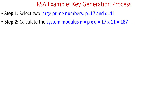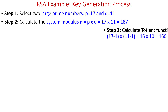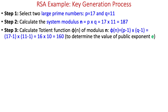In step two, we calculate the system modulus n = 17 × 11 = 187. In step three, we calculate the totient function phi(n), which is the product of (17 − 1) and (11 − 1), giving us phi(n) = 160.